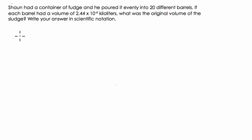So first of all, it's the Shaun had container of fudge. So I have this container of fudge, right? And it says that I take that fudge and I pour it evenly into 20 barrels. So already, really, this is not happening. So let's take a look at this.